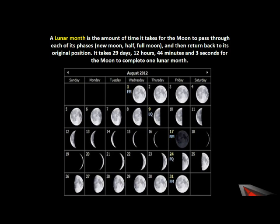The phases are: new moon, half moon, full moon, and then return back to its original position. So the lunar month is the interval between two successive new moons. It takes 29 days, 12 hours, 44 minutes and 3 seconds for the moon to complete one lunar month.